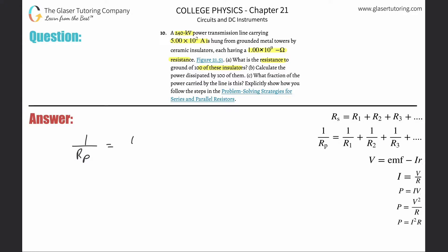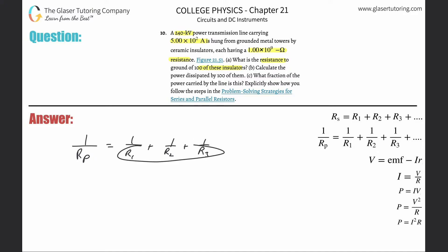Resistances in parallel are added up as reciprocals. You have 100 of them, each with a resistance of 1 times 10 to the 9th. Since the denominators are all the same, you can add the numerators, giving 100. So 1 over R_P equals 100 over 1 times 10 to the 9th.